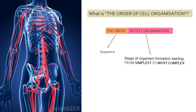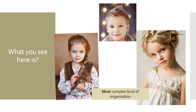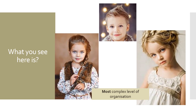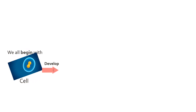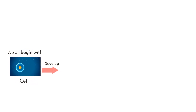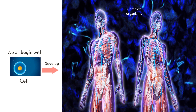Starting from the simplest to most complex. What you see here is an organism — humans — the most complex level of organization. We all begin with one cell and undergo a division process that develops into complex organisms.